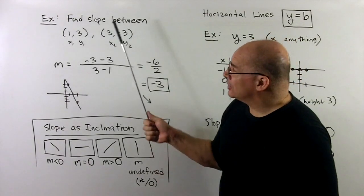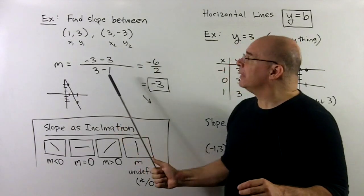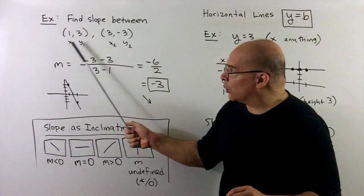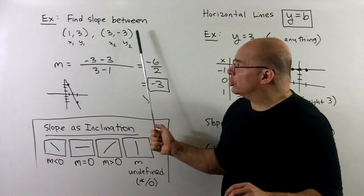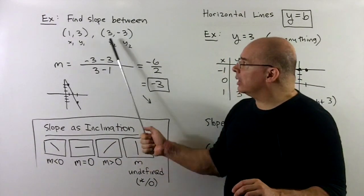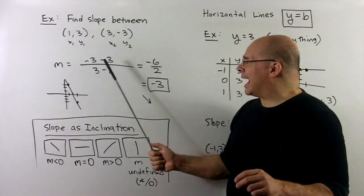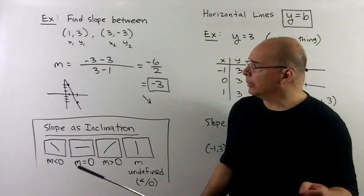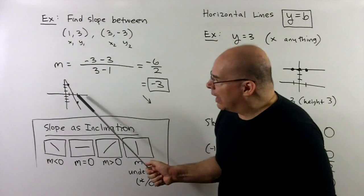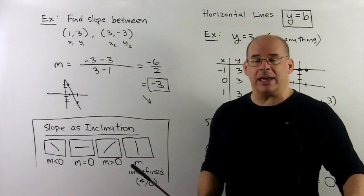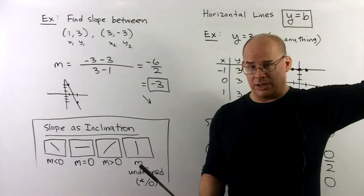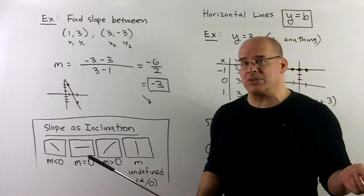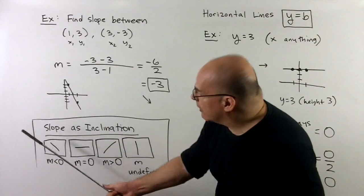Another example: find the slope through (1, 3) and (3, -3). Label x1, y1, x2, y2 and drop in the formula. We get minus 6 over 2, which is minus 3. A negative slope means the line is declining — going down and to the right instead of up and to the right.